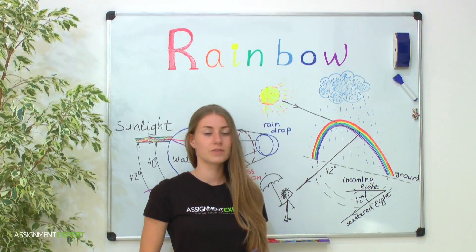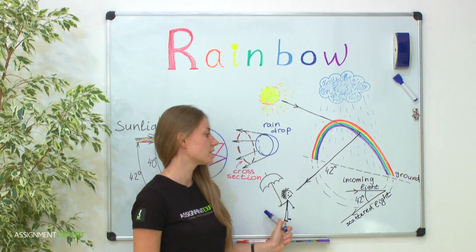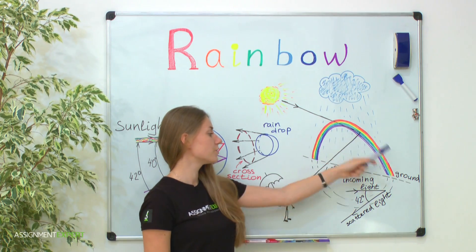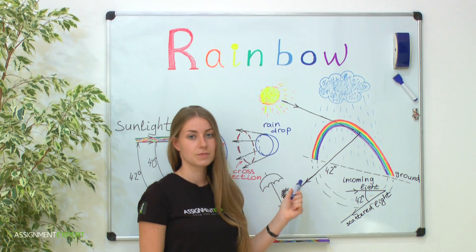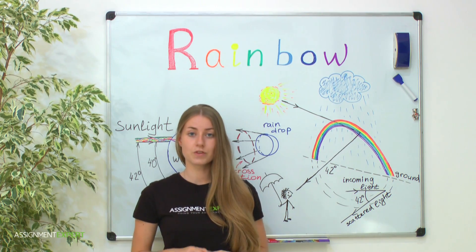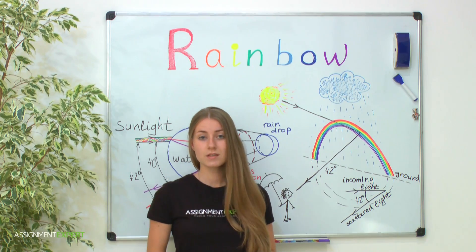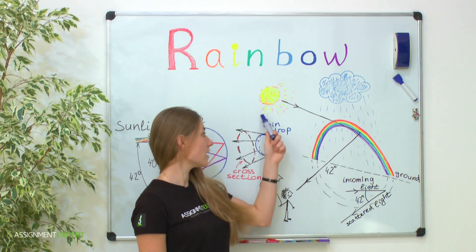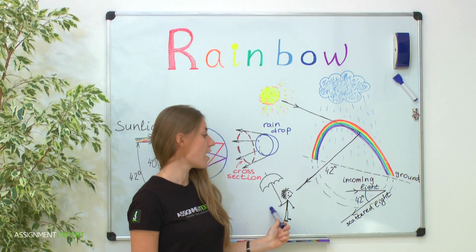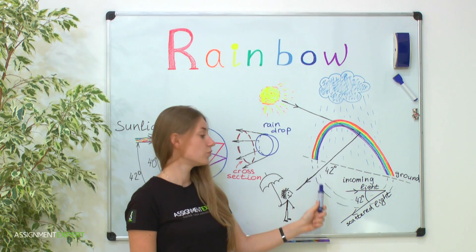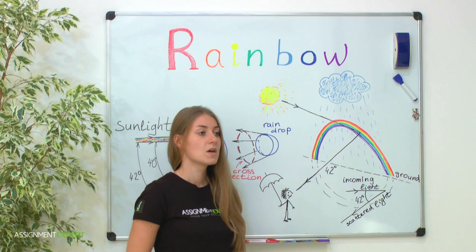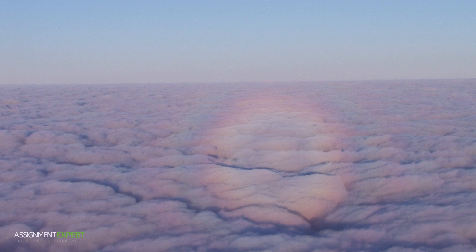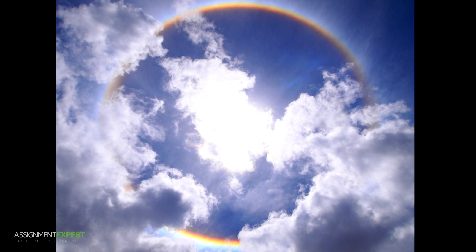We can see a rainbow only if the scattered rays reach our eyes. Only drops which lie on that circle satisfy this requirement. But we usually see a rainbow only as half a circle. This is because the sun is always behind us, and we can't find appropriate raindrops lower than the ground. If, for instance, you fly in a plane and look down onto raindrops, you will be able to see the full round rainbow.